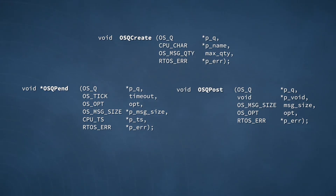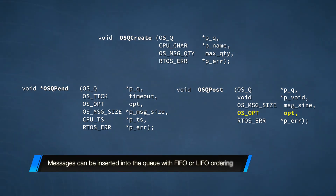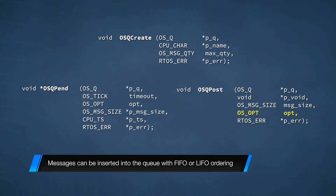One final aspect of pending and posting to consider is the manner in which messages are loaded into each queue. This is specified on a per-message basis through the fourth argument of OSQPost. Application code can specify first-in, first-out ordering or last-in, first-out behavior for any message.